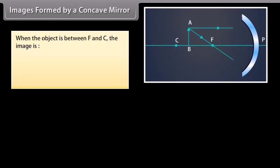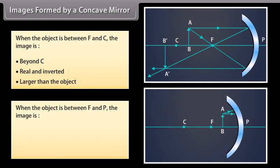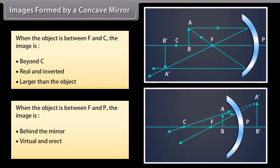When the object is between F and C, the image is beyond C, real and inverted, and larger than the object. When the object is between F and P, the image is behind the mirror, virtual and erect, and larger than the object.